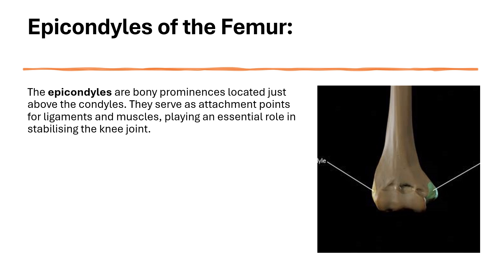There are two epicondyles. The medial epicondyle is situated above the medial condyle, and it is the attachment site for the medial collateral ligament, the MCL, which helps prevent the knee from collapsing inwards. It also serves as an attachment point for muscles involved in knee movements, including part of the adductor magnus muscle.